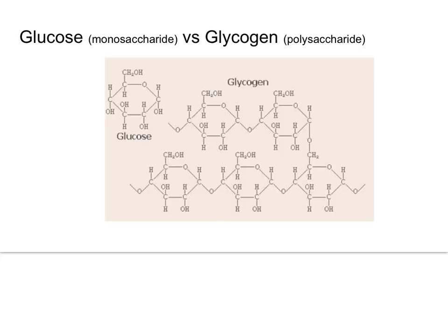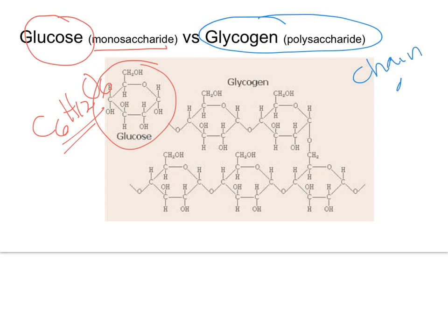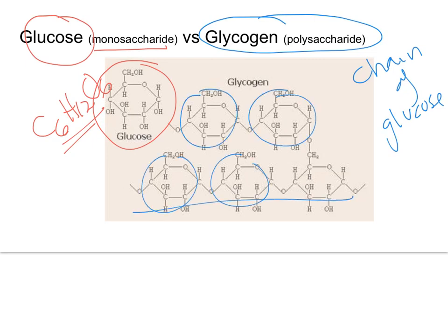The first thing we need to get straight is the difference between glucose and glycogen. Glucose is a monosaccharide — C6H12O6 — and this is the fuel that we use for making ATP in cellular respiration. Glycogen is a polysaccharide, a chain of glucose molecules bonded together to form this big molecule — an animal starch.